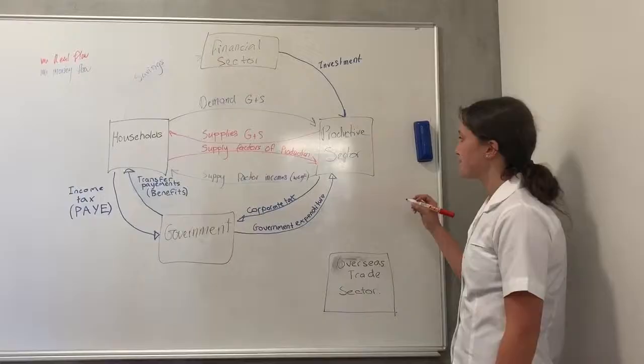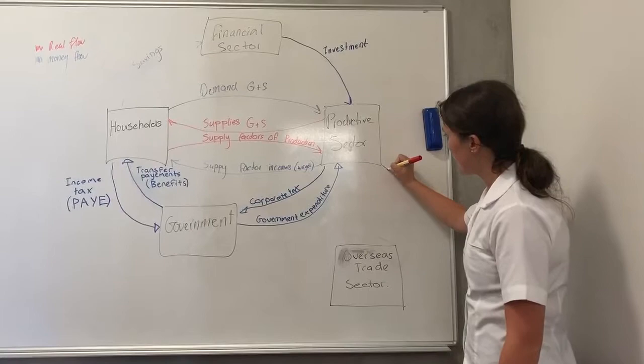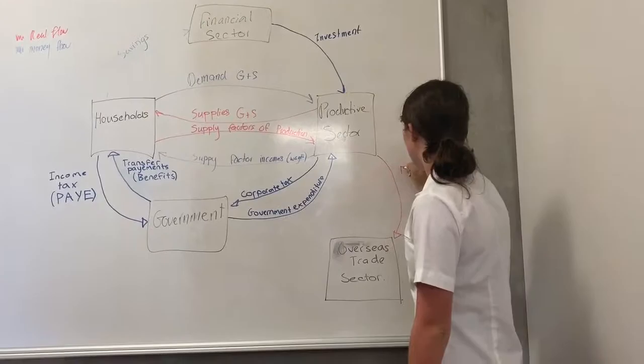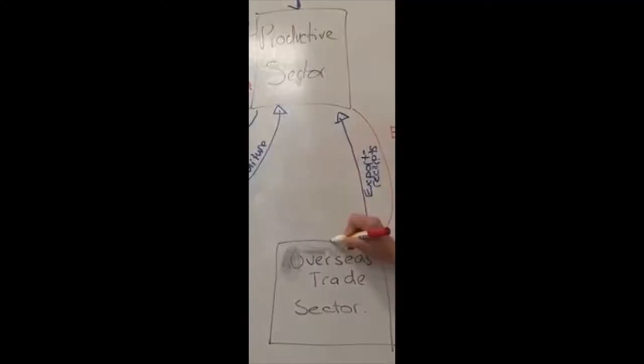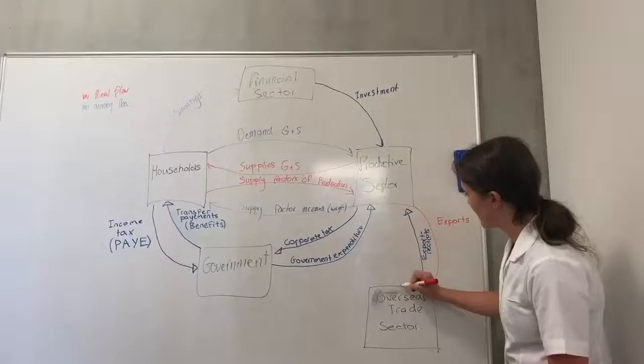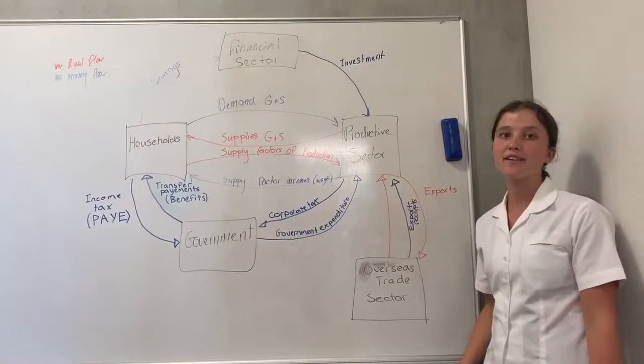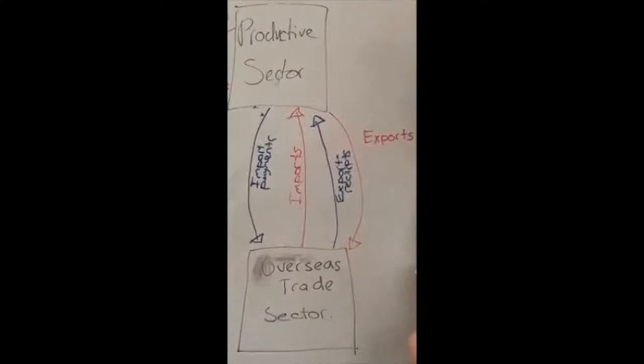The New Zealand productive sector exports goods and services to the overseas trade sector that they demand. In return, the overseas trade sector sends export receipts, which is the payment for the exports. The overseas trade sector then sends the imports that we demand in New Zealand, and in return we pay the overseas trade sector import payments for the goods and services.